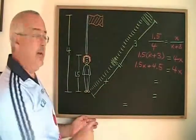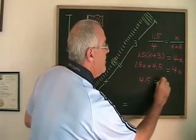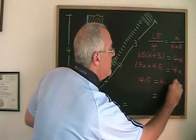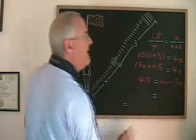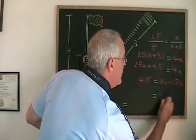If I move the 1.5x to the other side of the equals, I get 4.5 equals 4x minus 1.5x. Of course, 4x minus 1.5x is 2.5x.